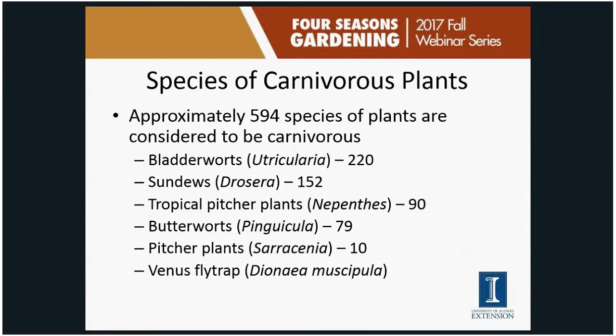There are about 594 species of carnivorous plants — roughly around 600 depending on the source, as some taxonomists are clumpers and some are splitters. Out of over 390,000 known plant species, carnivorous plants represent only about a tenth of a percent. We'll focus on the more species-rich groups that are also most commonly grown, especially for beginners: bladderworts, sundews, tropical pitcher plants, and butterworts.